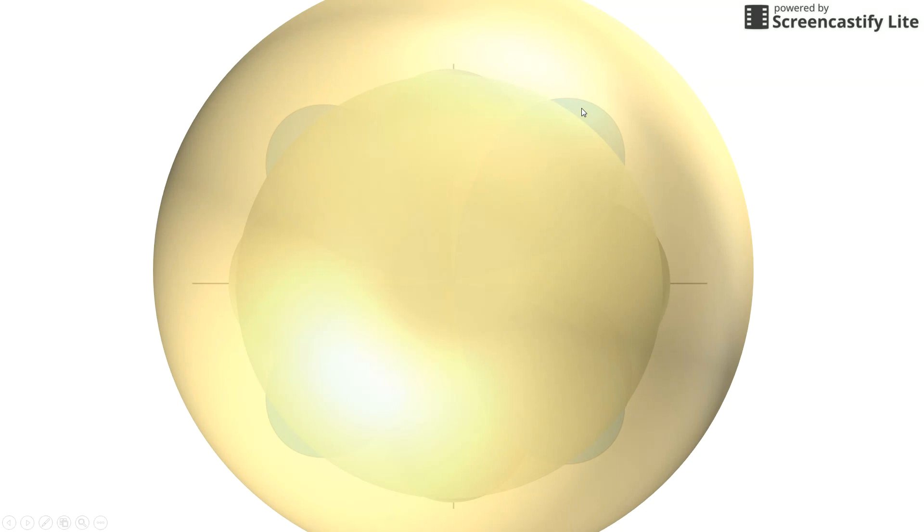So we actually have electrons in the 3D having higher energy than electrons in the 4S, although the electrons in the 3D are closer to the nucleus than the ones in the 4S in general.